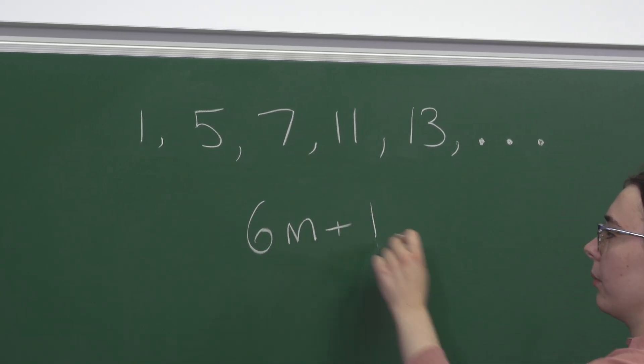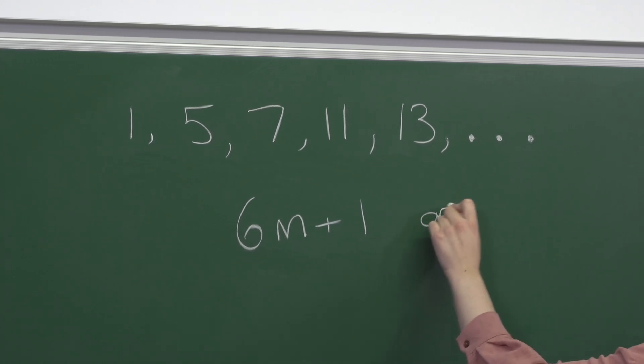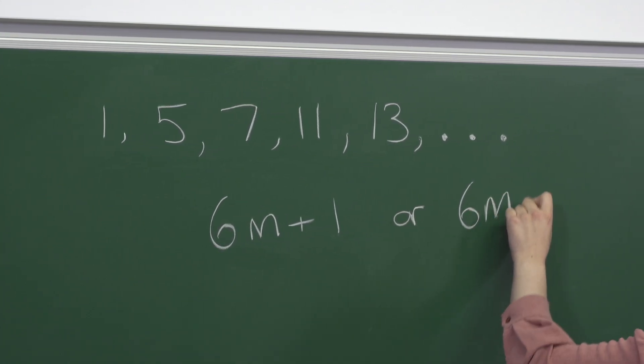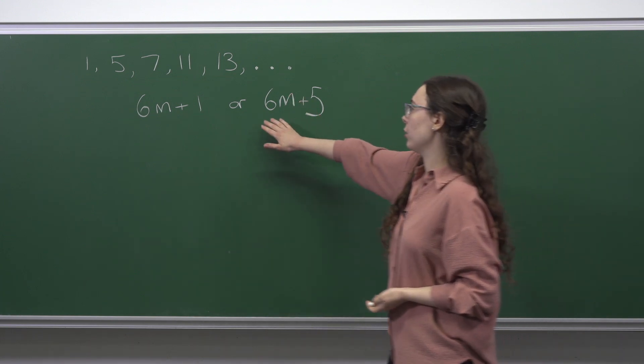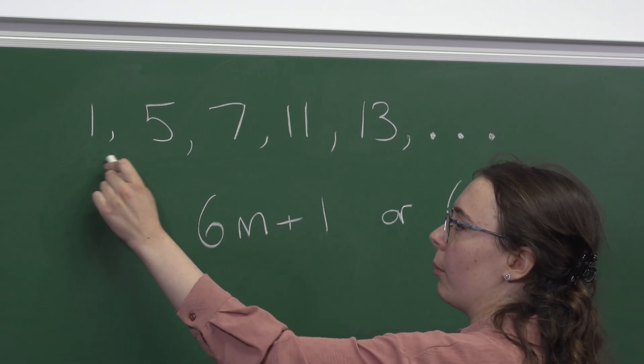6m plus 1 or 6m plus 5. And clearly our sequence is going to alternate between numbers which leave remainder one on division by six and numbers which leave remainder five.